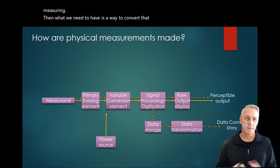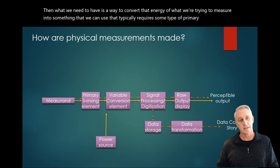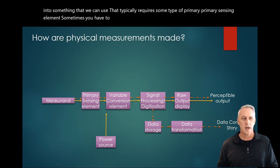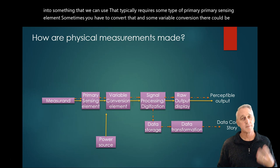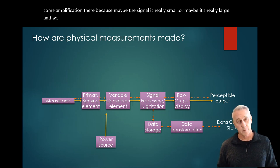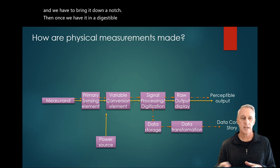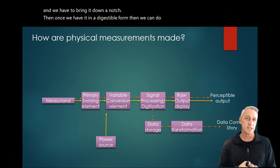That typically requires some type of primary sensing element. Sometimes you have to convert that with some variable conversion. There could be some amplification there because maybe the signal is really small, or maybe it's really large and we have to bring it down a notch. Then, once we have it in a digestible form, then we can do some processing and digitization.